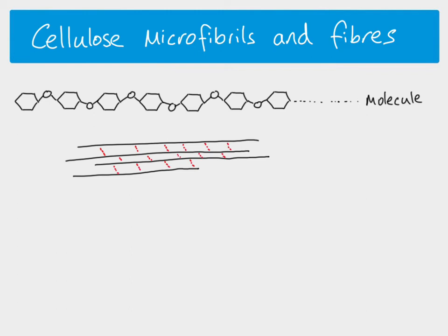If we have lots of those cellulose molecules — here each line represents one molecule — they are parallel to one another. A cellulose molecule is a completely straight chain with no branching and no kinking at all. Because they lie very close to one another, we can get hydrogen bonds forming between the chains, between the molecules, involving the many hydroxyl groups with their oxygens and hydrogens.